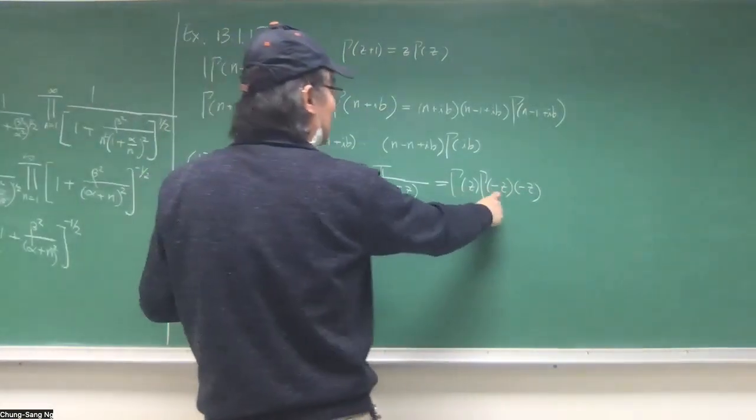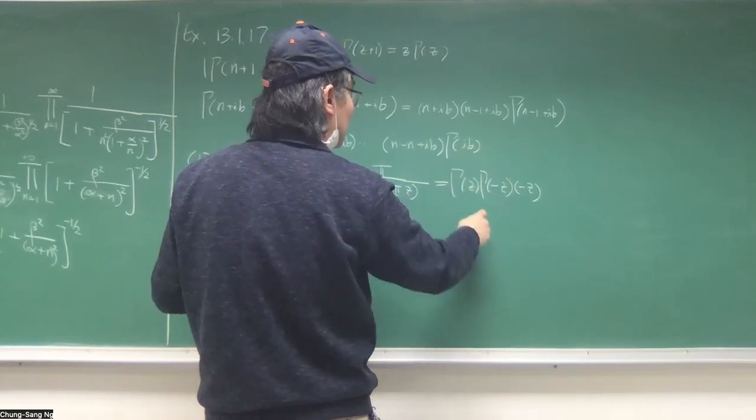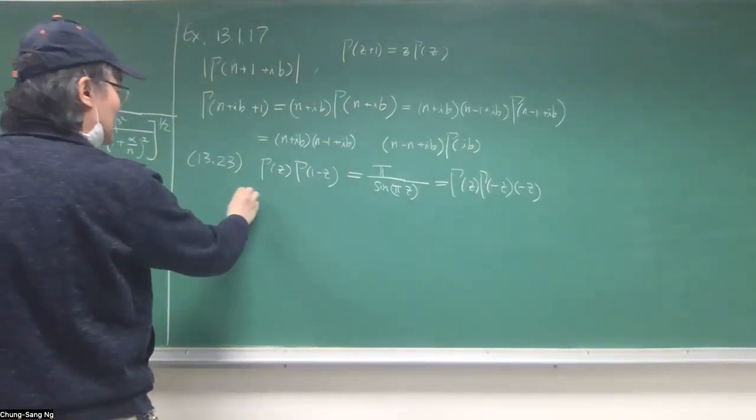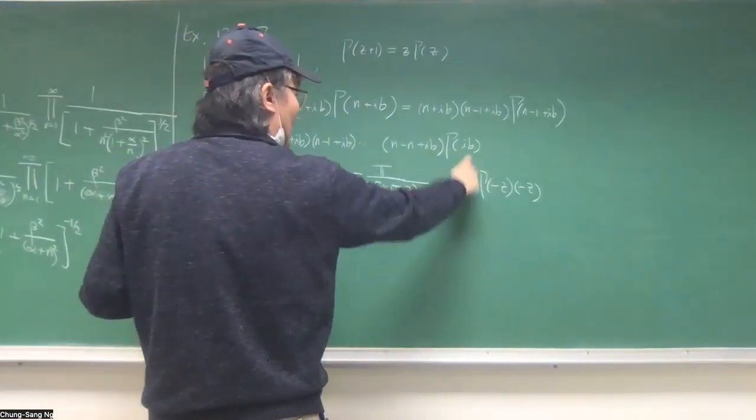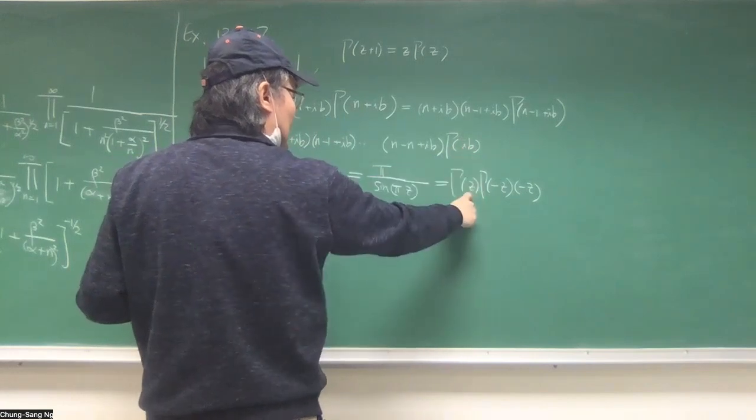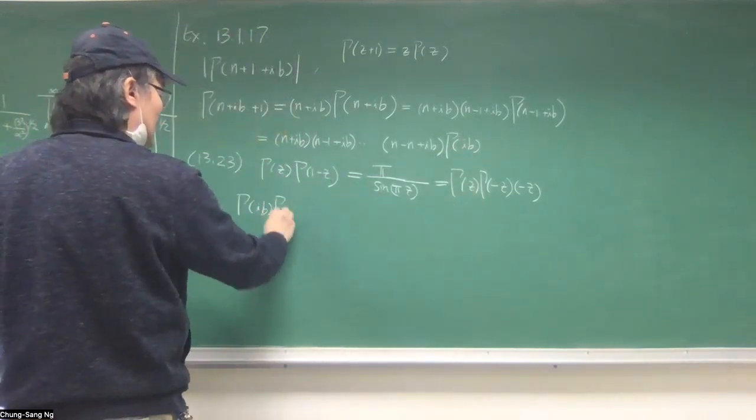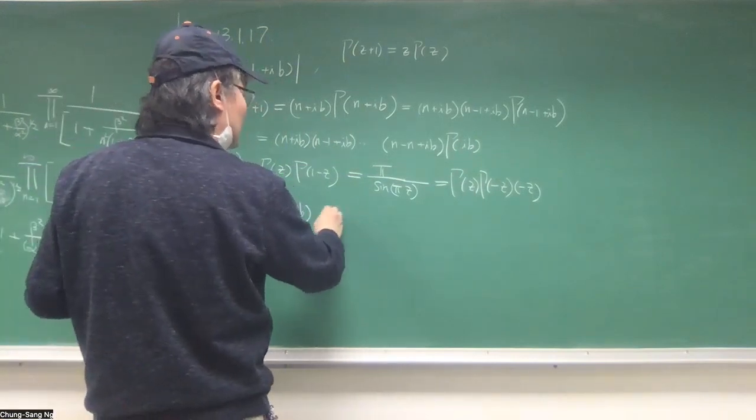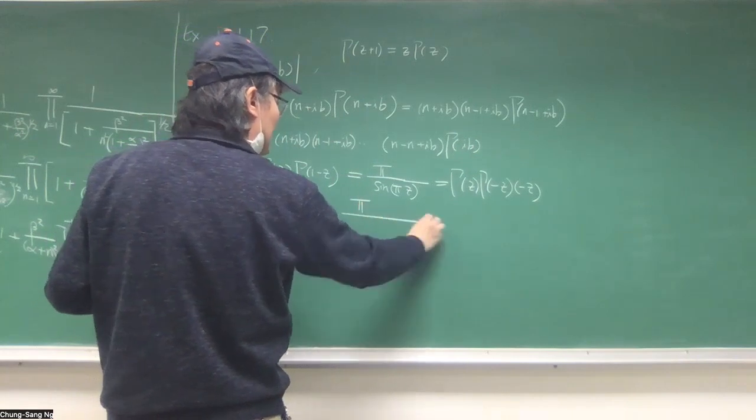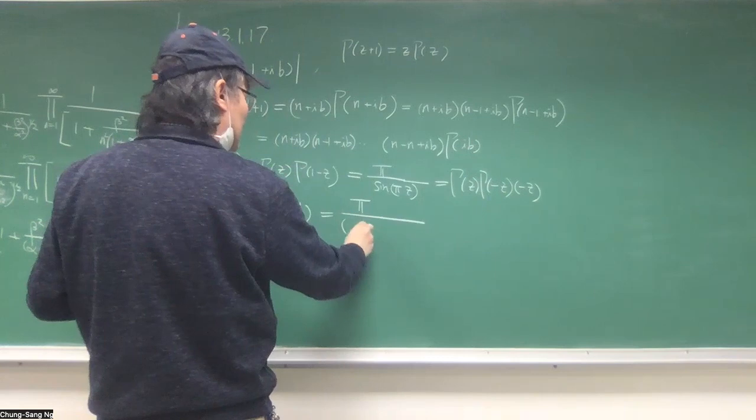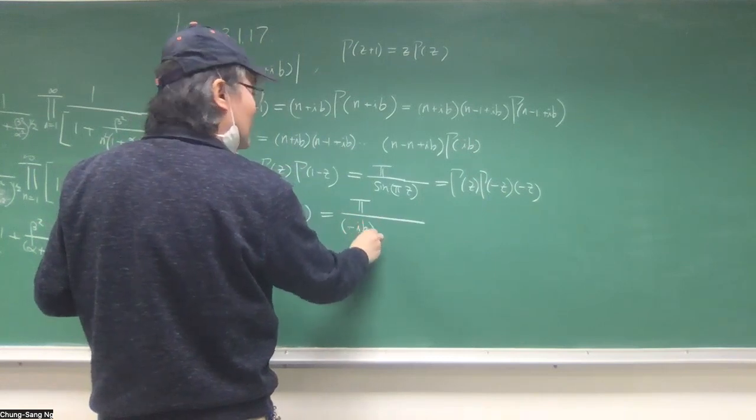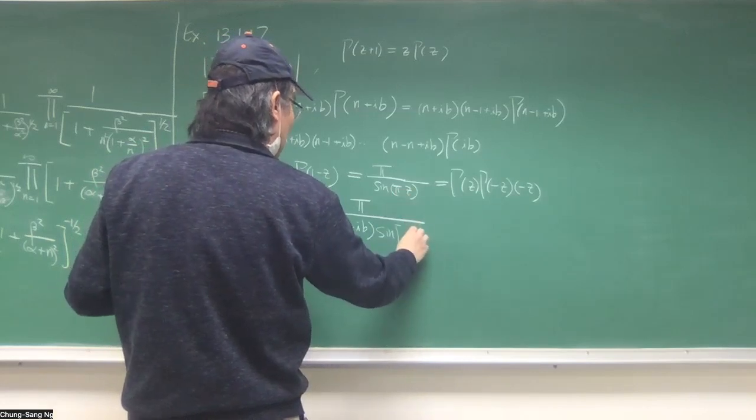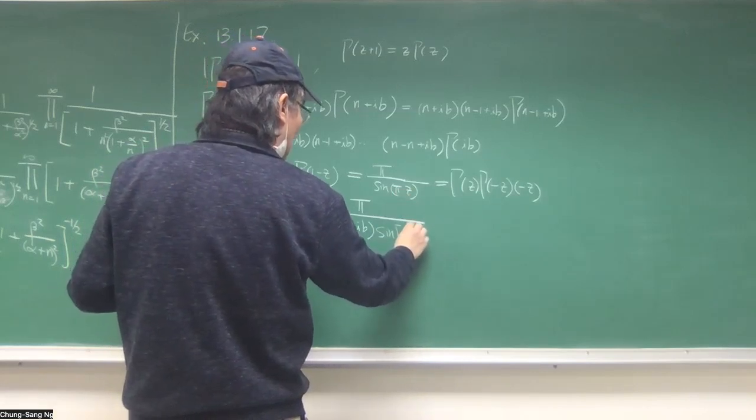The reason to do that, because I'm under IB, and then times minus Z equals to IB. So gamma IB, applying Z equals to IB, and then minus Z equals to minus IB, equals to pi, and divide that to the other side, times minus IB, and then sine pi IB.